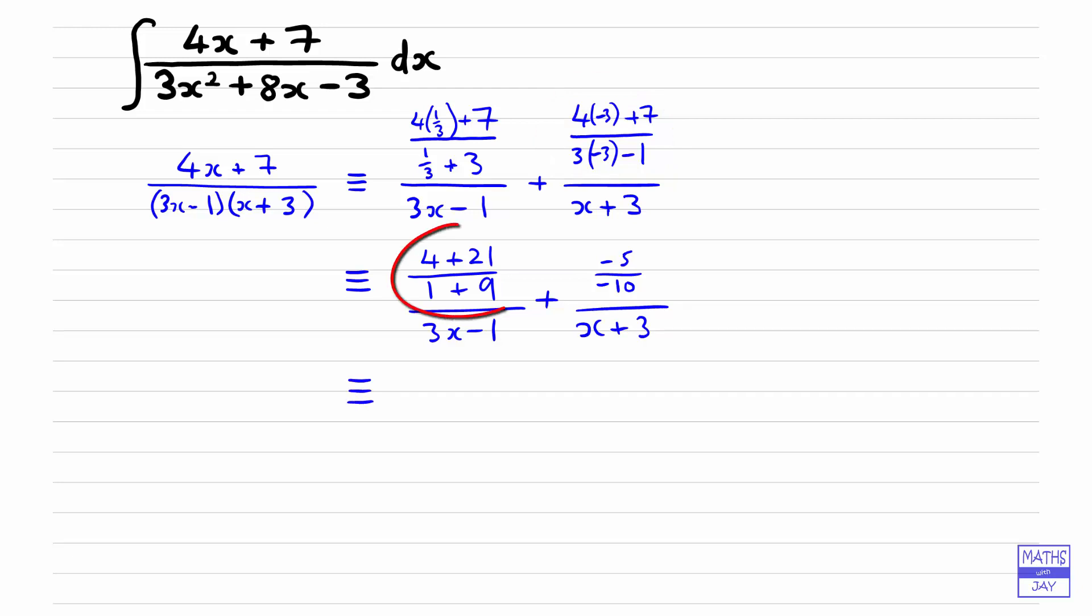So then the first one we will get 25 over 10, so that will simplify to 5 over 2, and then we can just write that as 5 over 2 times 3x minus 1, and then the minus 5 over minus 10 simplifies to a half, so the 1 goes on top, the 2 drops down, multiplies the x plus 3, and there we have 2 fractions equivalent to our original fraction.